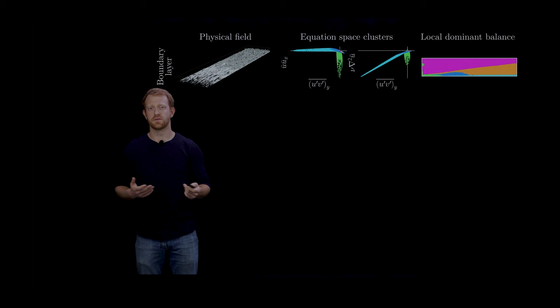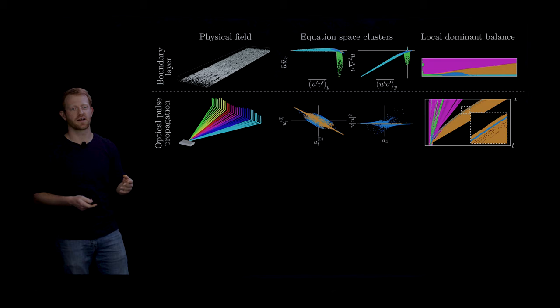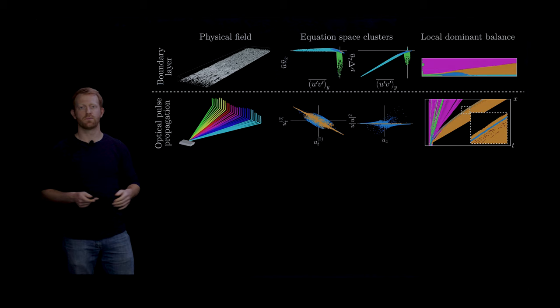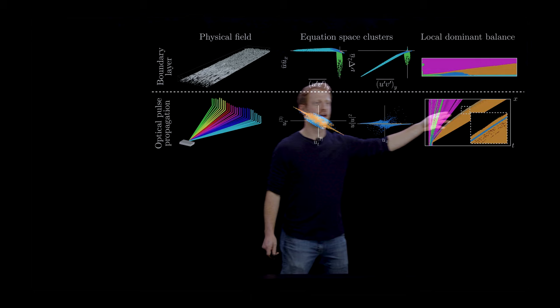For instance, we look at optical pulse propagation in a certain kind of fiber optic cable and we find that most of the field can be described pretty well by linear dispersion relations except for this very energetic soliton that needs a nonlinear Schrödinger type dominant balance.